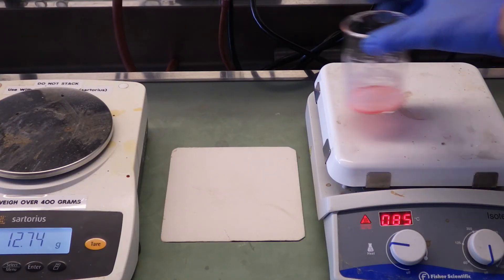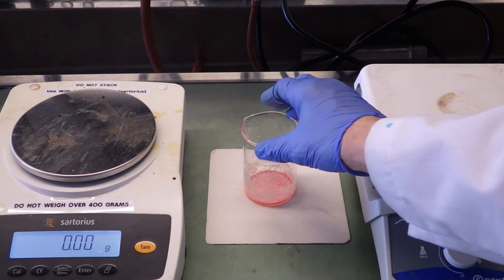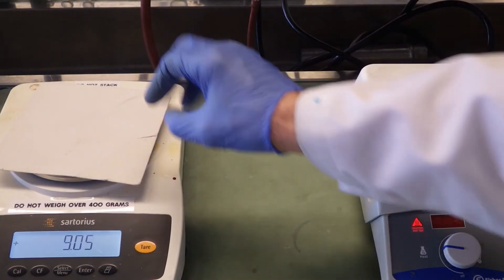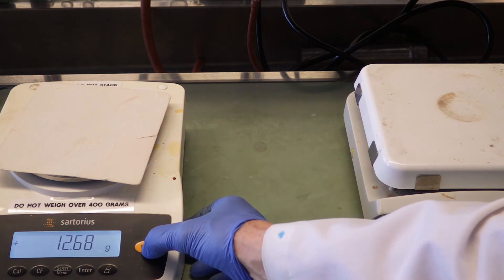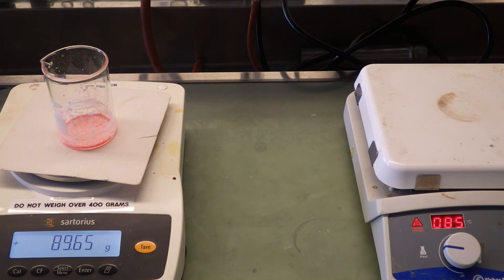And let's get our first mass. That white plate is a fiberglass plate and so it just protects the balance from the hot beaker. Here's our first mass.